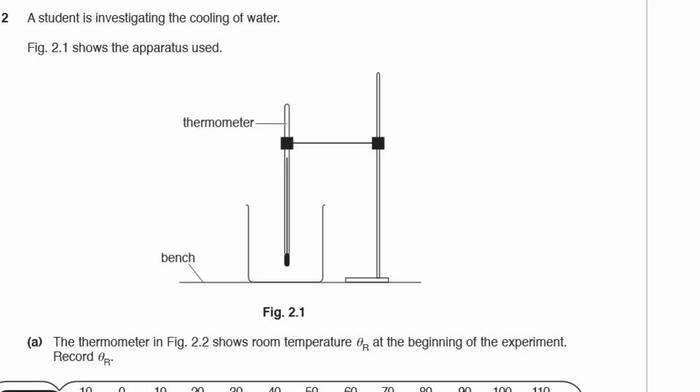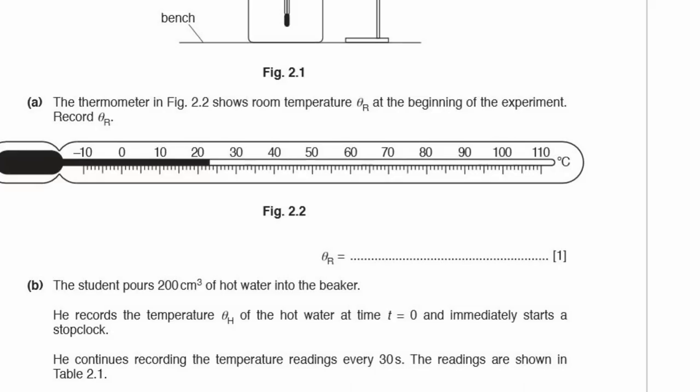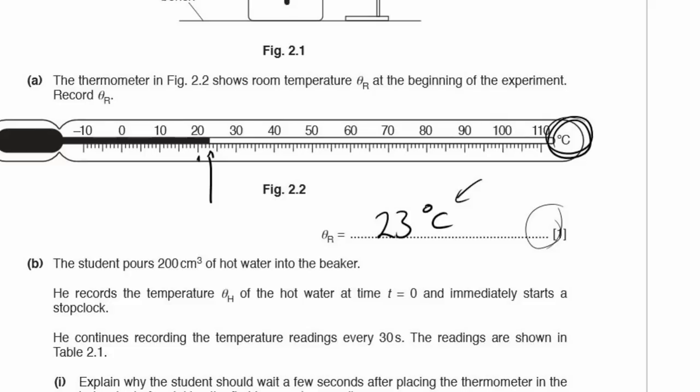Question 2. A student is investigating the cooling of water. Figure 2.1 shows the apparatus being used. Part A. The thermometer in figure 2.2 shows room temperature theta r at the beginning of the experiment. Record theta r. We have to take a look at our measurement here. That looks to me to be 23 degrees Celsius. Be careful, make sure you're putting in the units, because there's no units listed here. Always check that the units are in the question or in the answer.